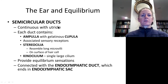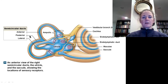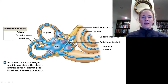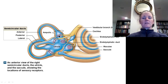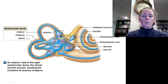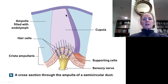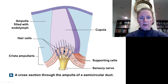Looking at the semicircular ducts: these are continuous with the utricle, part of our vestibule. At each semicircular duct, there is a swelling called the ampulla. Within the ampulla is a gelatinous mass called the cupula, and the hair cells with their cilia are embedded into this gelatinous mass. Here we can see the cupula with hair cells and their microvilli-like projections, embedded in a basal membrane called the crista ampullaris.